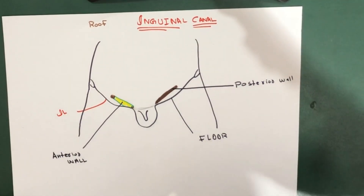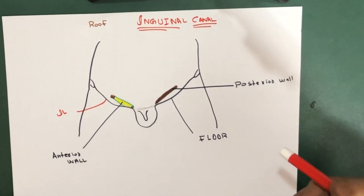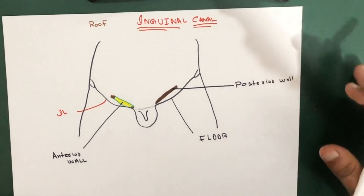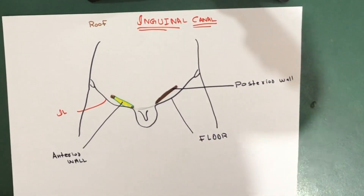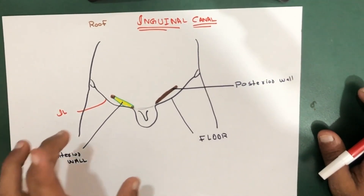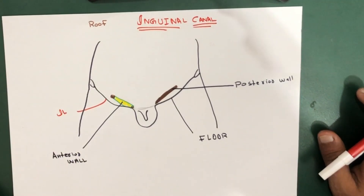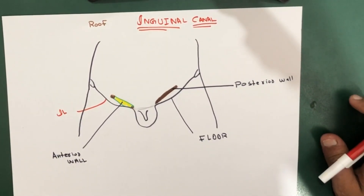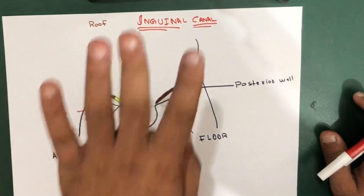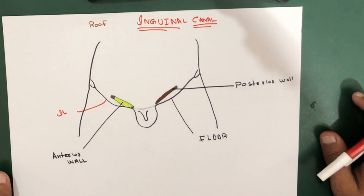Now let's talk about the boundaries of the inguinal canal. The canal is mainly a passage through which the testes in males sexually pass. We'll first cover the boundaries, then the openings, then the contents, and finally four clinical things.